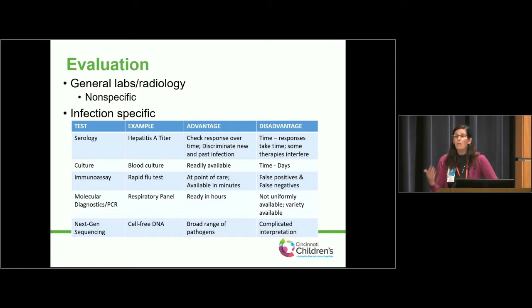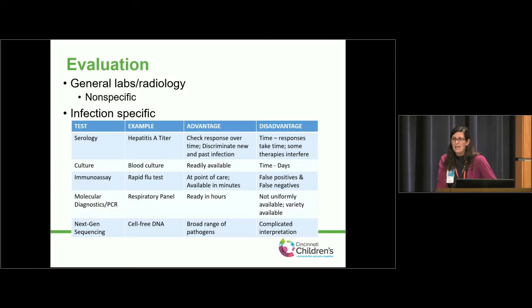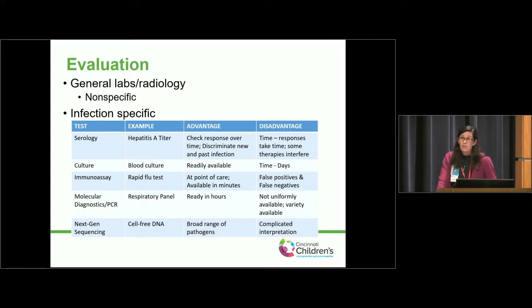There are also rapid tests — if your child comes in and we think they have the flu, you can know in 20 minutes, but those tests aren't always 100% accurate; you can have false positives and false negatives. We also have more specific molecular diagnostics or PCRs, which can detect things very quickly and at a lower level, but they can also detect remnants of DNA that aren't from an active infection — so context is very important.